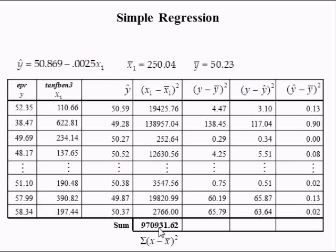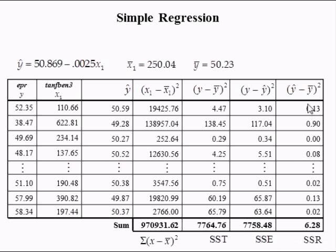The total variation in X is equal to 970,931.62. The total variation in Y is equal to 7,764.76, known as the total sum of squares. The residual, Y minus Y-hat, is the estimated error. When we add up all 100 squared errors, we get the sum of squared errors equal to 7,758.48. Totaling the 100 squared deviations of predicted from mean gives the sum of squares due to regression.